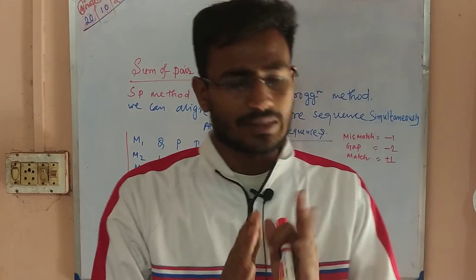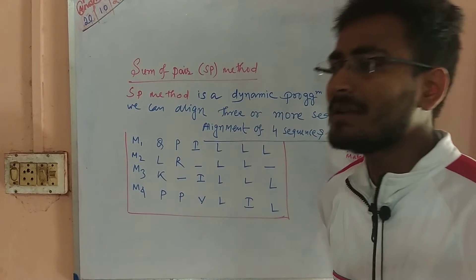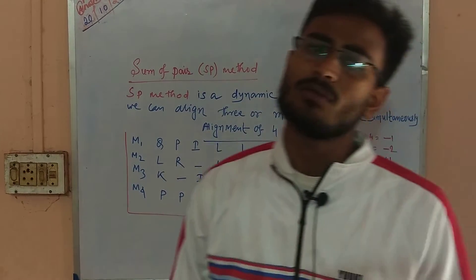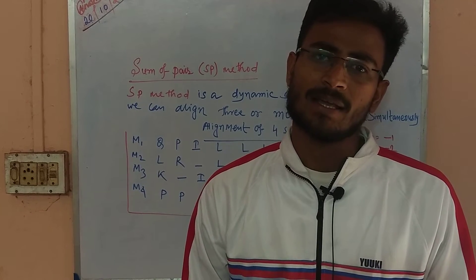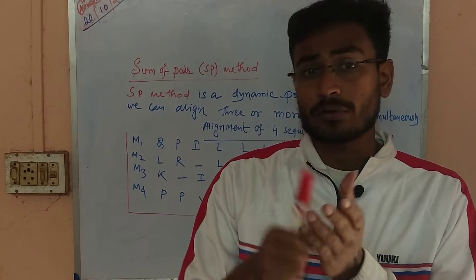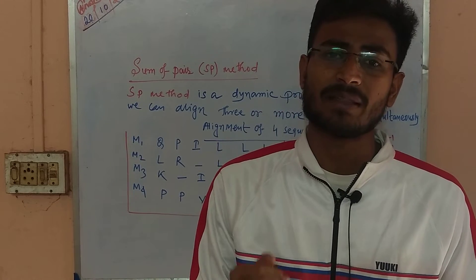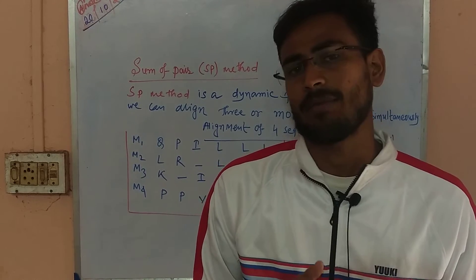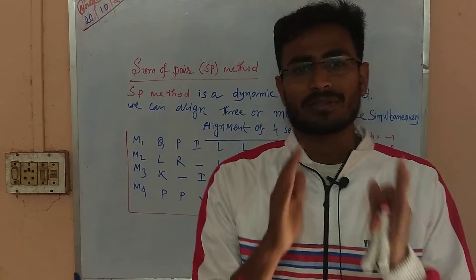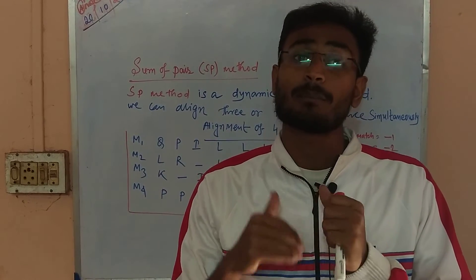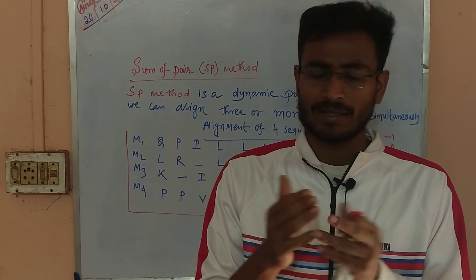A common long question asks: what is multiple sequence alignment? Briefly explain the methods of multiple sequence alignment. Multiple sequence alignment involves several methods: the Sum of Pairs method, the heuristic and progressive method, and the iterative method.